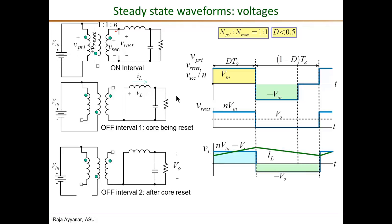The next waveform is the inductor voltage V_L, defined positive at the left end. During the on interval, V_L equals N times V_in minus V_o. During both off intervals, V_L equals minus V_o. The inductor voltage is positive during the on interval and negative during both off intervals, and its average must be zero in steady state.